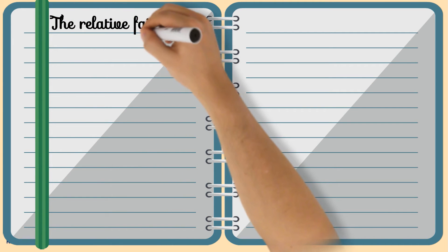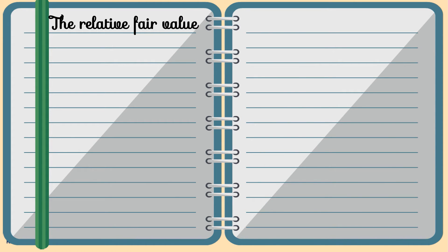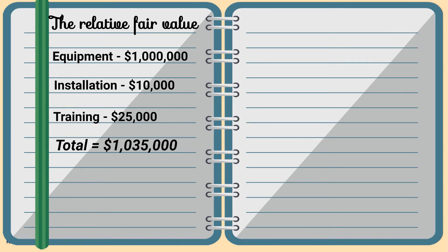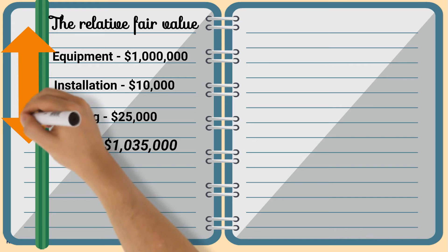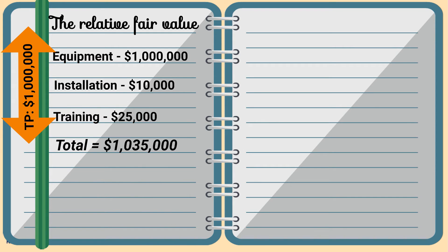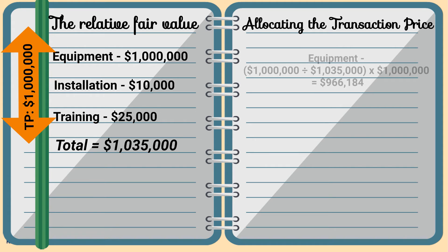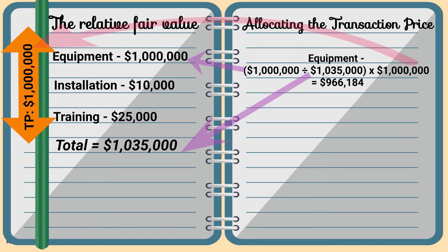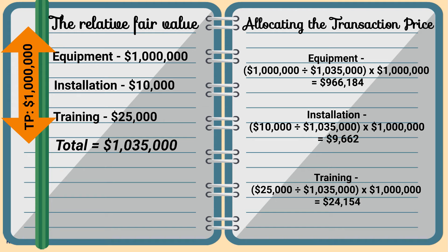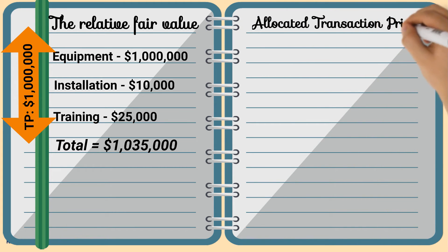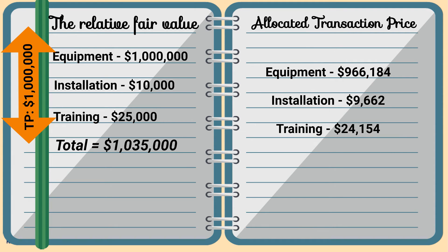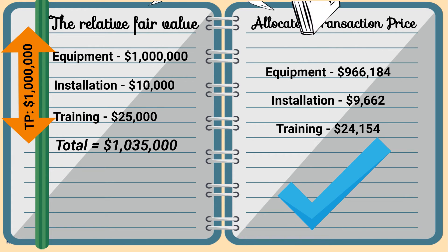Let's take a look at how to calculate the transaction price of each performance obligation in the contract. The relative fair value stand-alone selling price of each performance obligation is as follows. In the contract, it is stated that the transaction price payable upon delivery and installation is $1 million for all three performance obligations. Therefore, the calculation to allocate the transaction price in relation to the relative selling price of each performance obligation is as follows. Hence, the allocated transaction price for each performance obligation would be recognised as revenue for this contract between Company C and its customer.